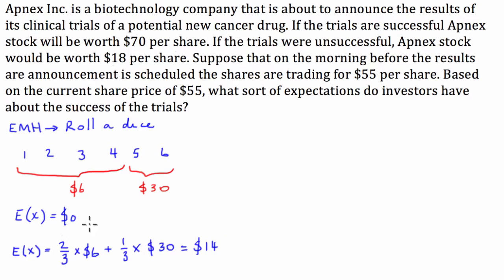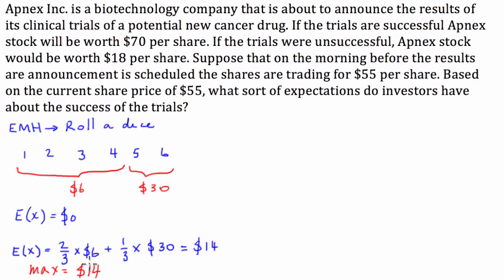So what that means is, for the expected payoff to be 0, the maximum we'd be willing to pay for this game would be $14. That's how much we'd be willing to pay for our ticket, because if we play this game a high number of times at a $14 ticket price, we expect to neither lose nor win any money. So how does this apply to the stock problem?